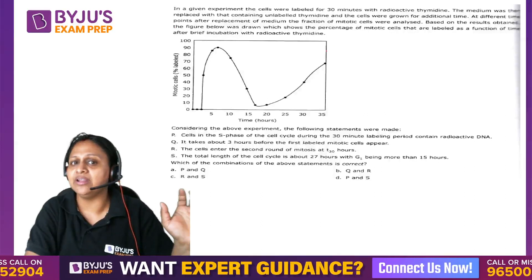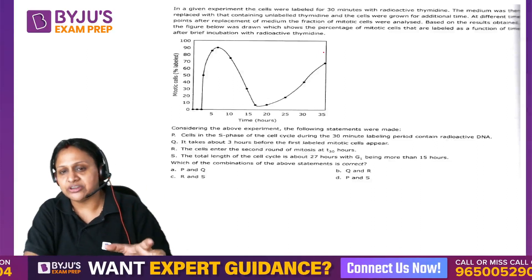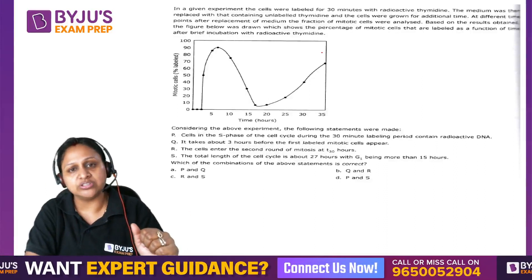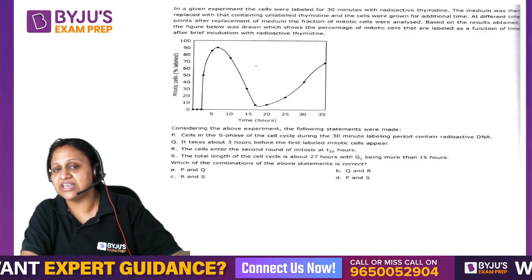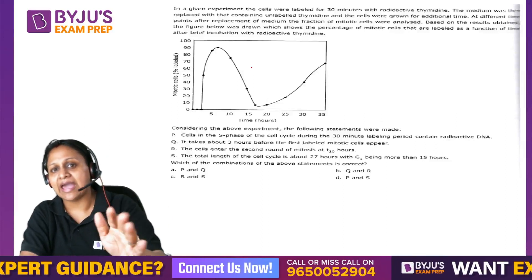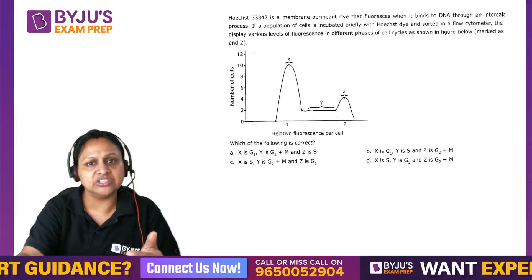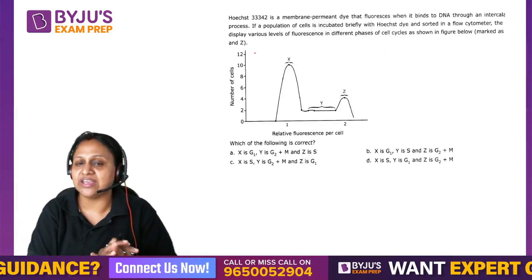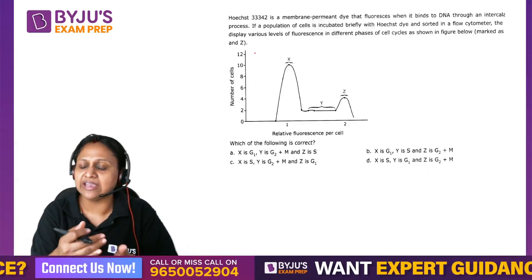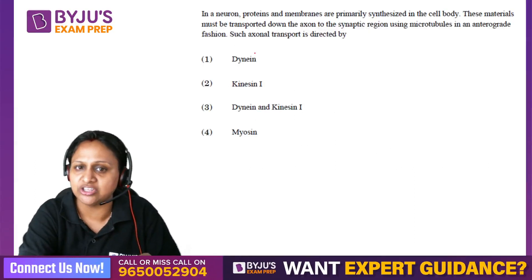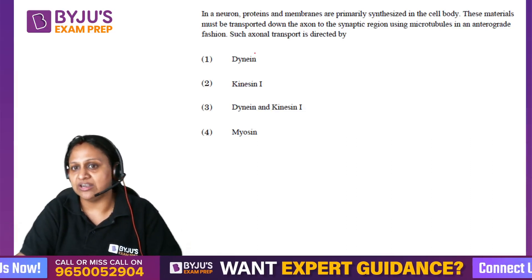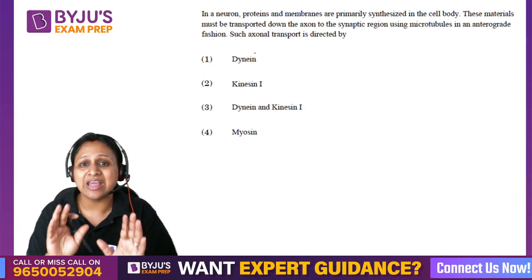For cell cycle, the radioactive thymidine incorporation technique is an important topic — it has been asked 3 to 4 times with slight variations. This is an experiment-type question and is important. There are also pointer-type questions from the cell cycle, and the cell cycle is highly important overall — you need to have the fundamentals and regulation clear. For motor proteins and cytoskeletons, what has been studied in classes is sufficient if you have revised enough.